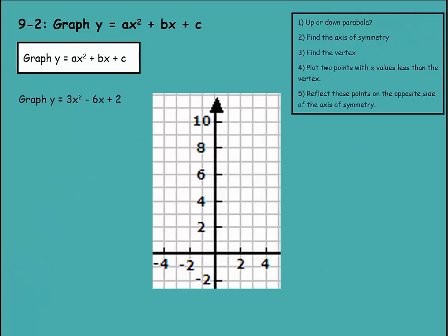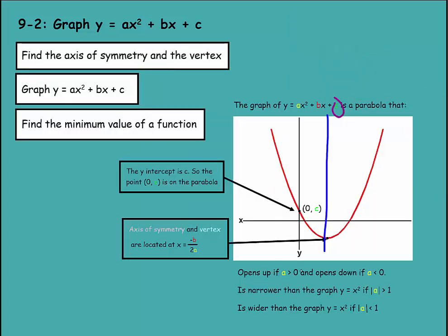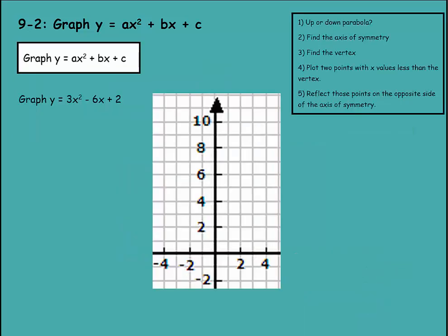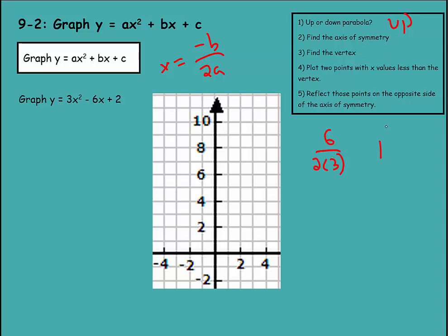Now we can put this on a graph. First, determine whether it is an up or down parabola. Since a is positive, this is going to be facing up. Next, find the axis of symmetry and the vertex using x equals negative b over 2a. So x equals negative negative 6, which is positive 6, over 2 times 3, giving 6 over 6, which equals 1. The axis of symmetry is x equals 1. Plugging x equals 1 in: 3 times 1 squared minus 6 times 1 plus 2 equals 3 minus 6 plus 2, which is negative 1. So the vertex is at (1, -1).